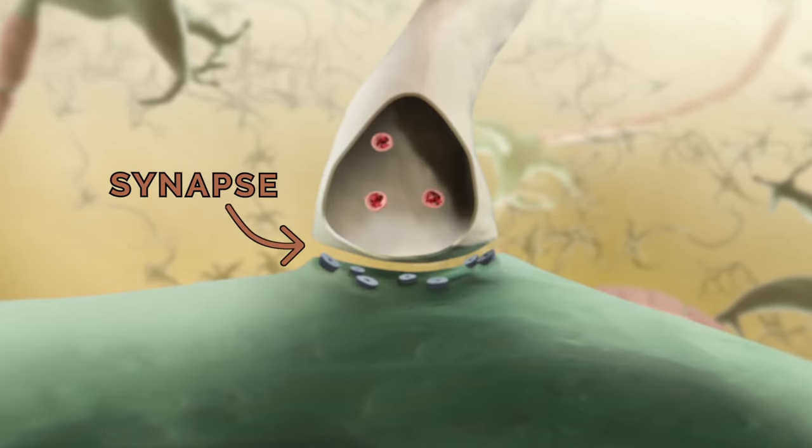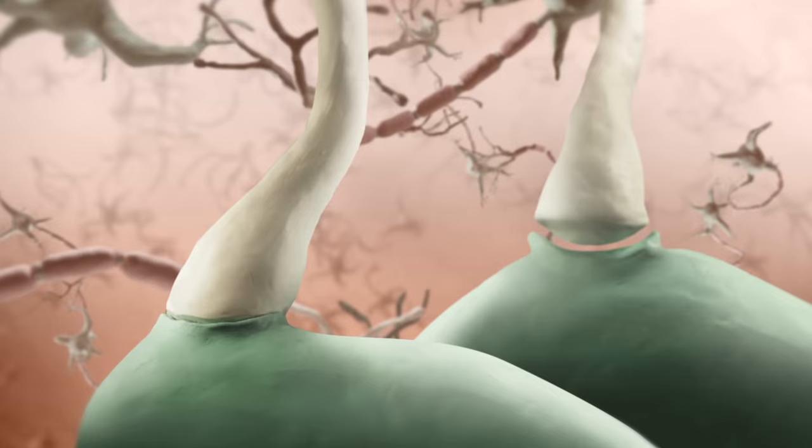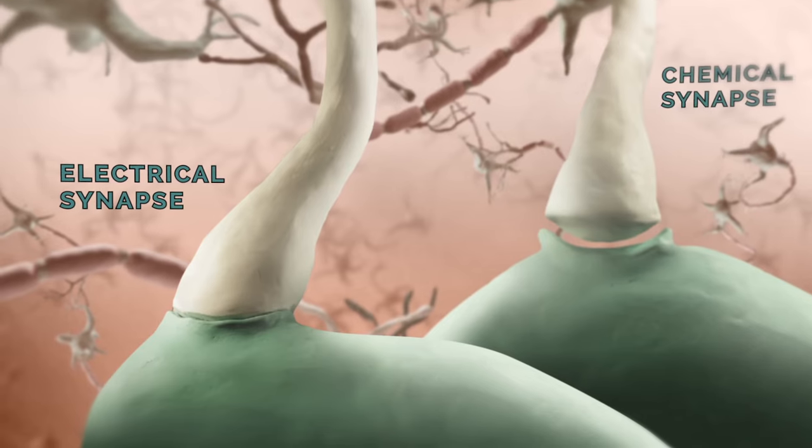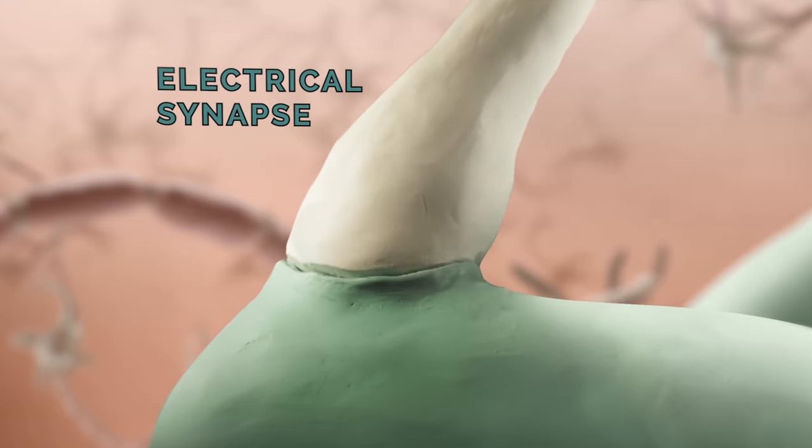This interface is called a synapse. There are two general types of synapses: electrical synapses and chemical synapses. Electrical synapses are less common in our own nervous systems, but they're simpler to think about, so let's start with them.